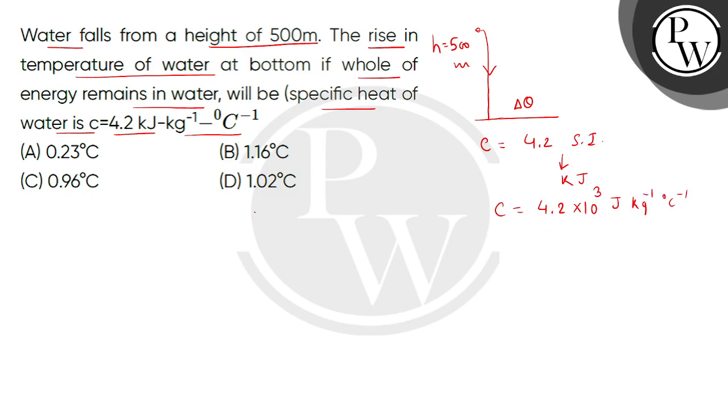So bicho, we will apply conservation of energy here. The potential energy lost, that is equals to the energy used to heat up the water. So potential energy lost is MGH, and heat energy gained is mass multiplied by specific heat, multiplied by change in temperature. It means water has absorbed MC del theta energy.